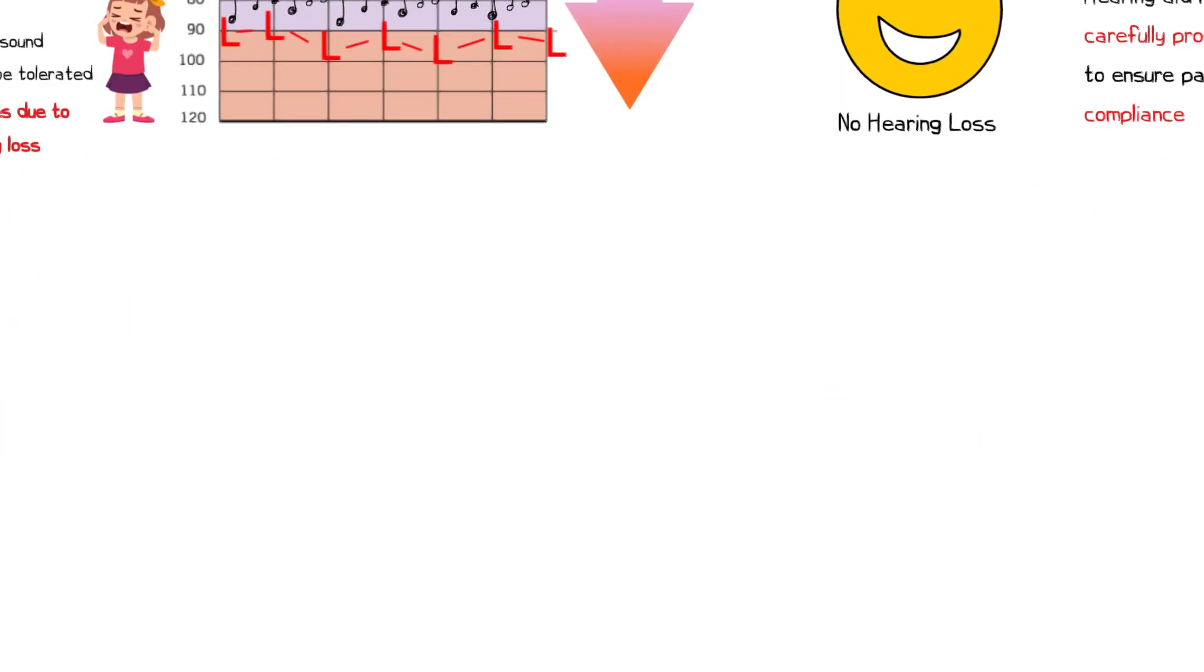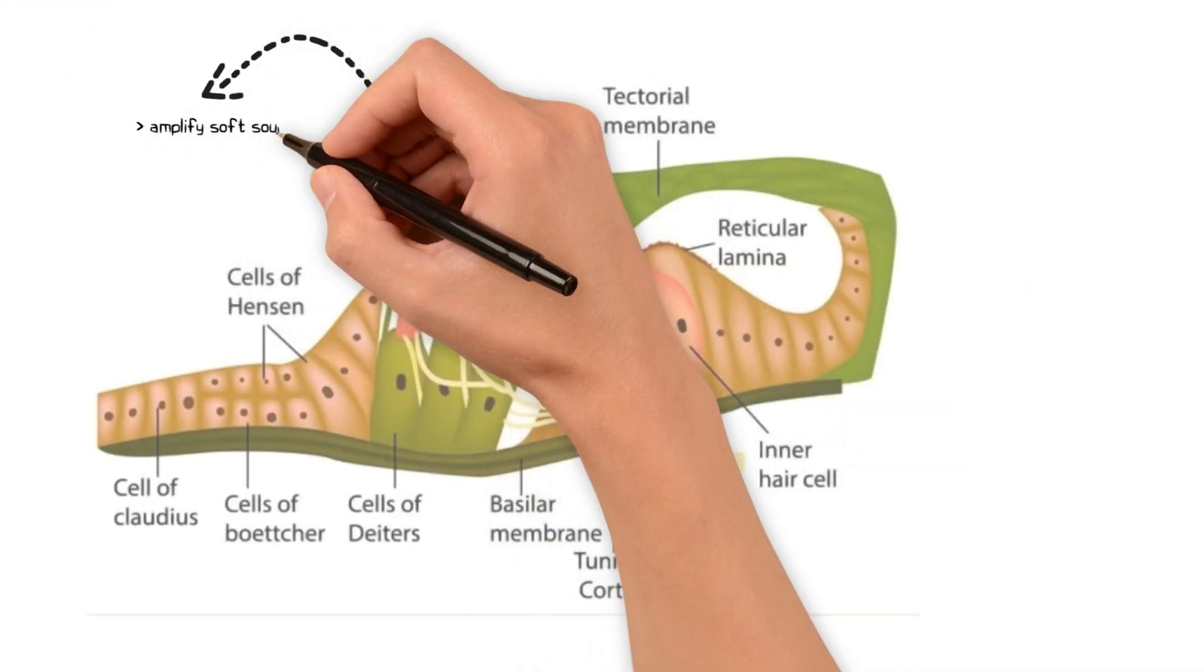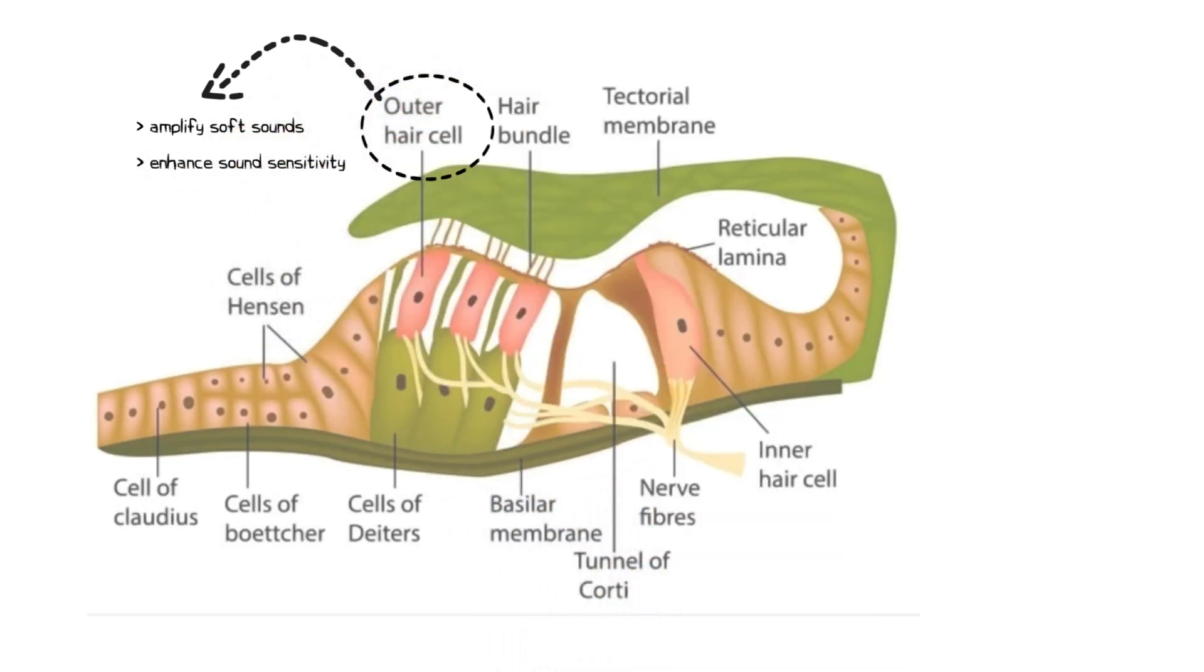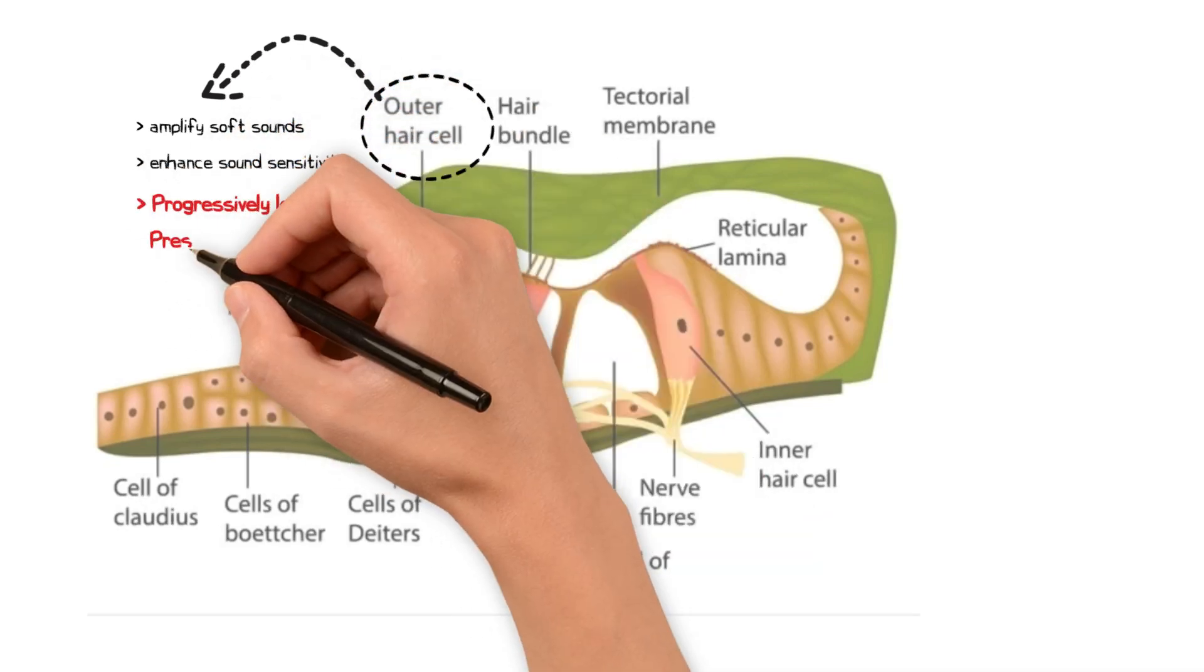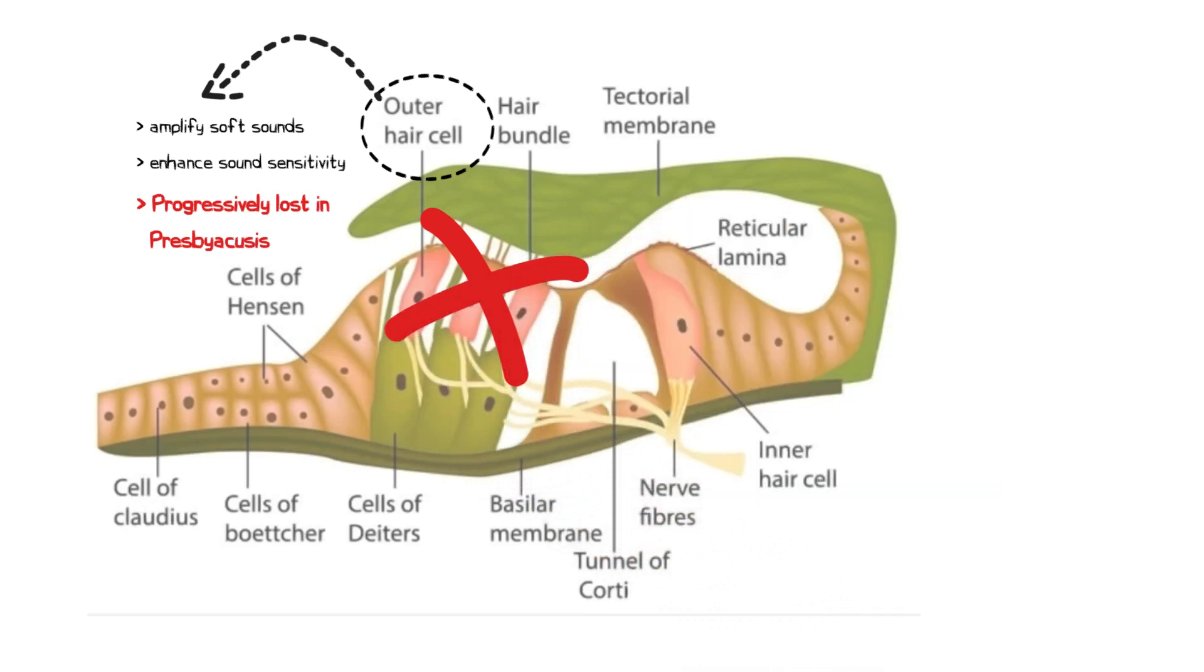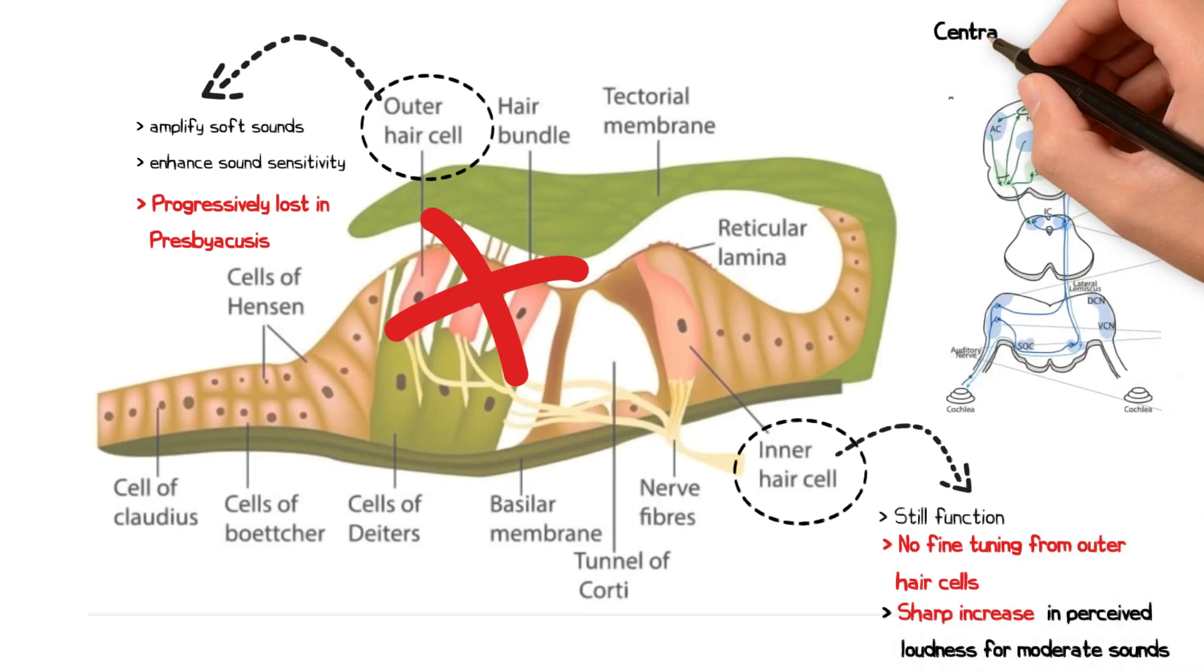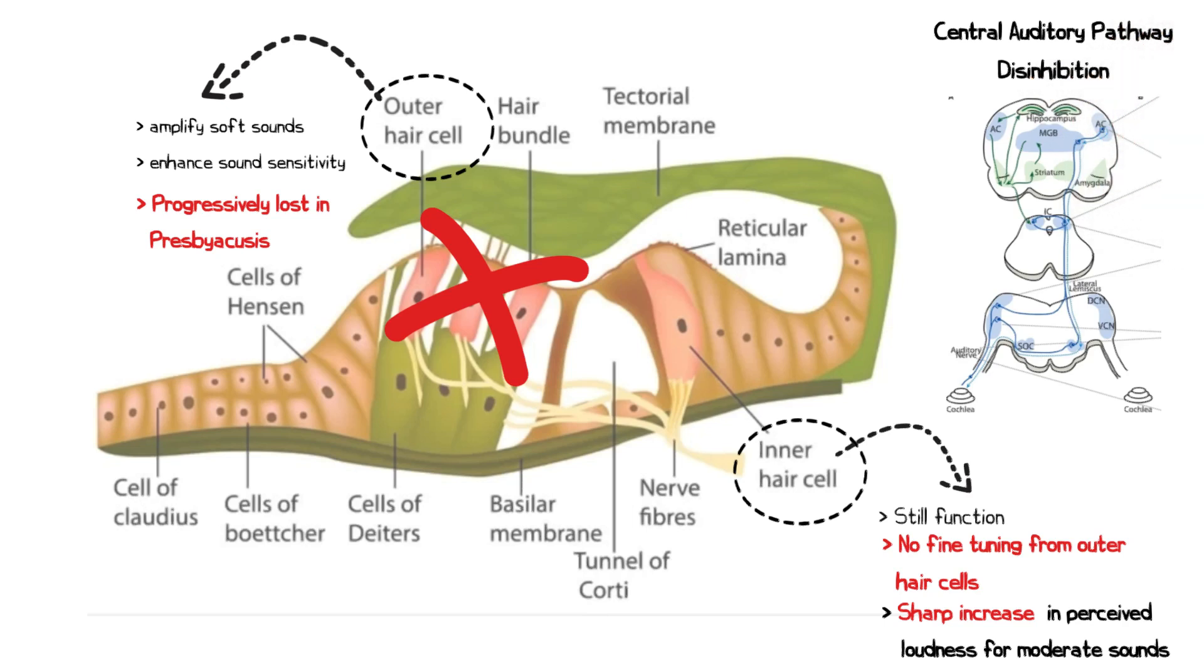The loss of dynamic range is due to loss of outer hair cells in the cochlea. These ordinarily amplify soft sounds and enhance sound sensitivity. However, in presbyacusis, as these cells are progressively lost, there is a reduction in sensitivity to quiet sounds. However, when sounds are louder and reach a certain level, the inner hair cells still function but without the fine tuning provided by the outer hair cells. This creates a sharp increase in the perceived loudness for moderate sounds. This is exacerbated by disinhibition of the central auditory pathways, known as central gain, as a consequence of reduced hearing.